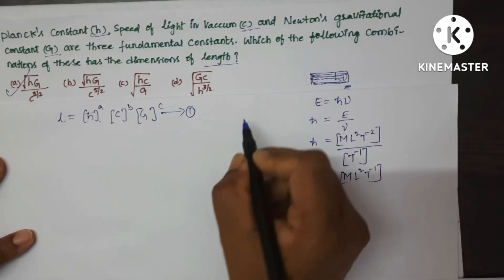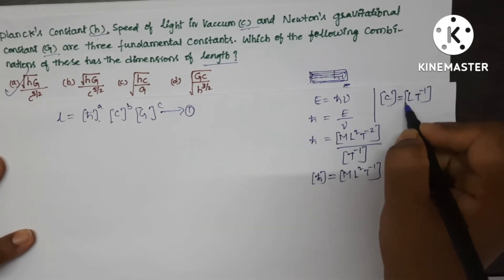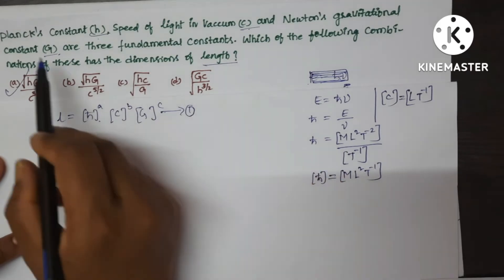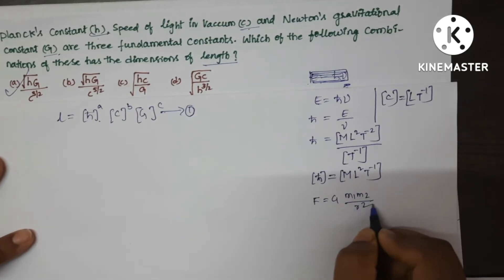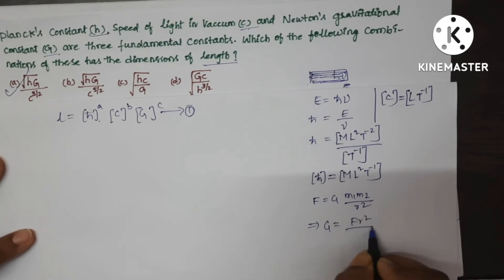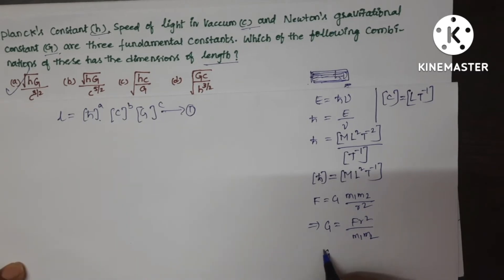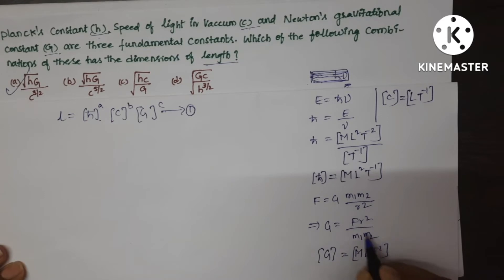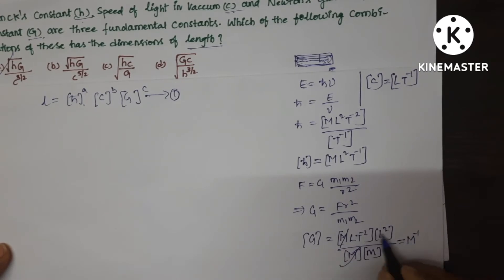C is the speed of light, so its dimensions are L T⁻¹. For G, write the gravitational force formula F = G·M₁M₂/R², so G = F·R²/(M₁M₂). The dimensional formula of force is M L T⁻², R² is L², and M·M cancel, leaving M⁻¹ L³ T⁻². This is the dimensional formula of G.